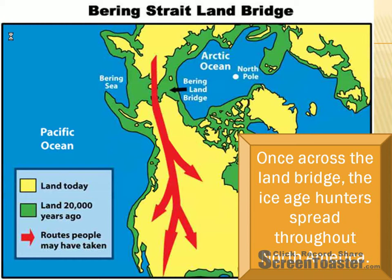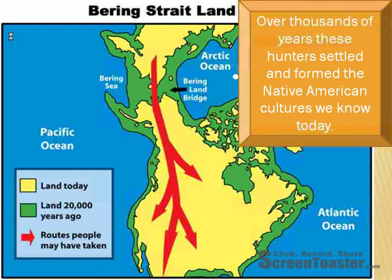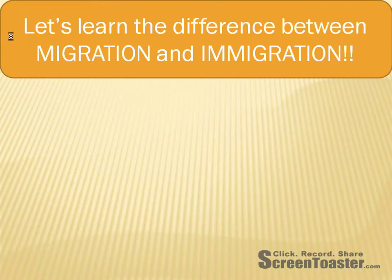Once across the land bridge, the Ice Age hunters spread throughout North America — you can see that in the red arrows spreading across North America. Over thousands of years, hunters settled and formed the Native American cultures we know today. This took thousands and thousands of years to get to the point where we know of the Native Americans in all their different nations and tribes. So it didn't just happen overnight — it happened over thousands of years.